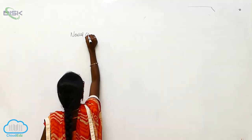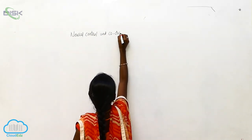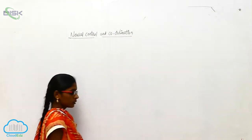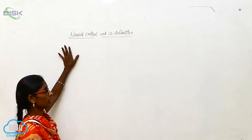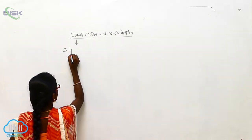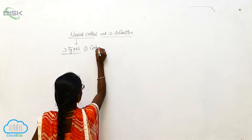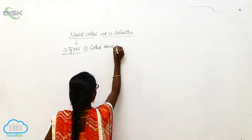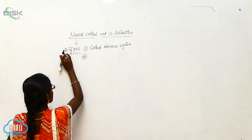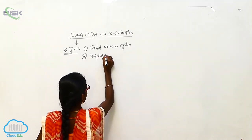Neural Control and Coordination. The Neural System consists of two types: the Central Nervous System and the Peripheral Nervous System.